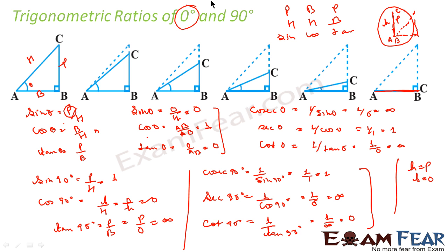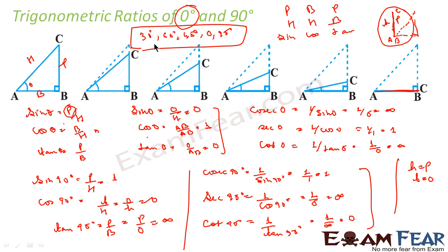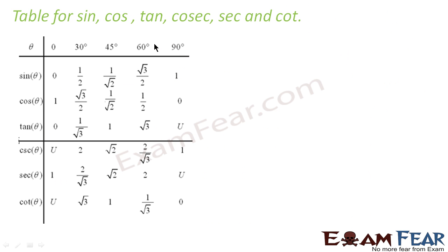So till now, what we have done? We have got the trigonometric ratios of 30 degree, 60 degree, 45 degree, 0 degree, and 90 degree. For all these values we have got trigonometric ratios. Thus, we form a table. We have 0, 30, 45, 60, and 90.